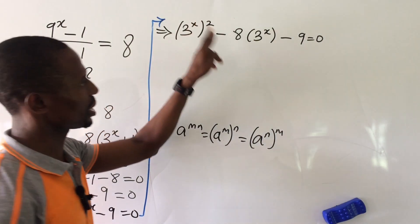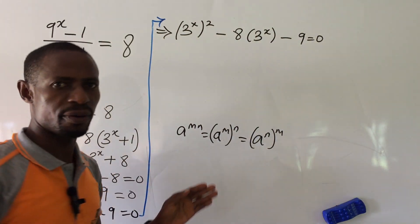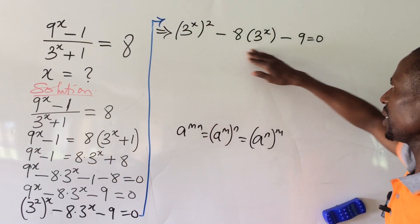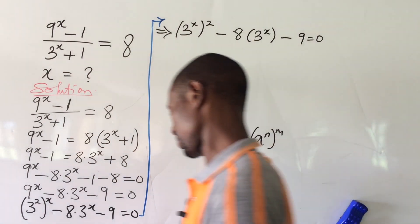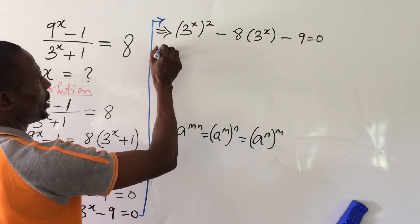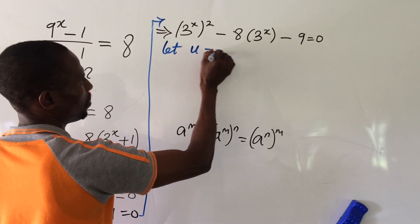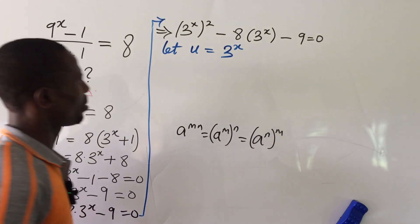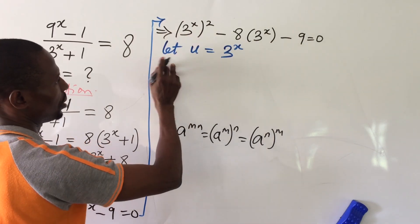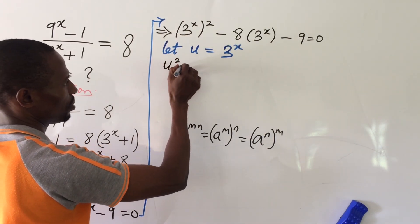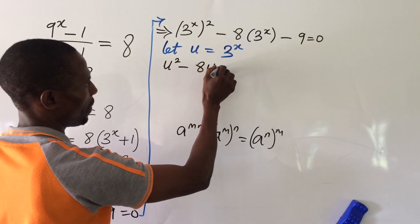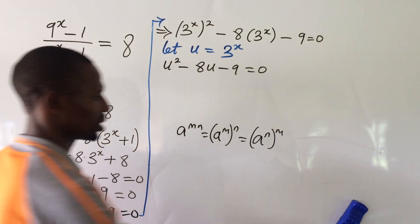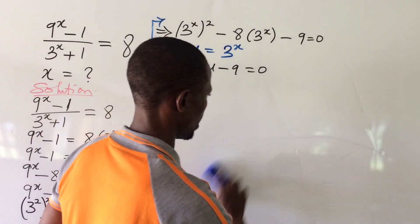We have 3^x appearing twice, so we can substitute with another variable to obtain a quadratic equation. Let u = 3^x. Wherever we see 3^x, we put u. The equation becomes: u² minus 8u minus 9 equal to zero. This is a quadratic equation, so let's solve it using the factorization method, which is the quickest approach.